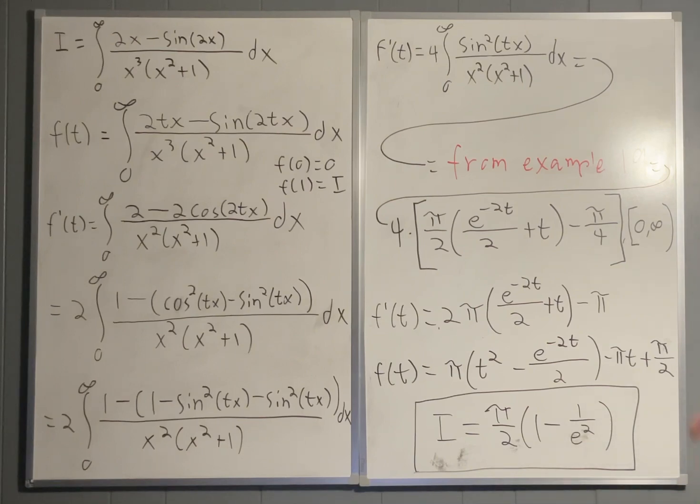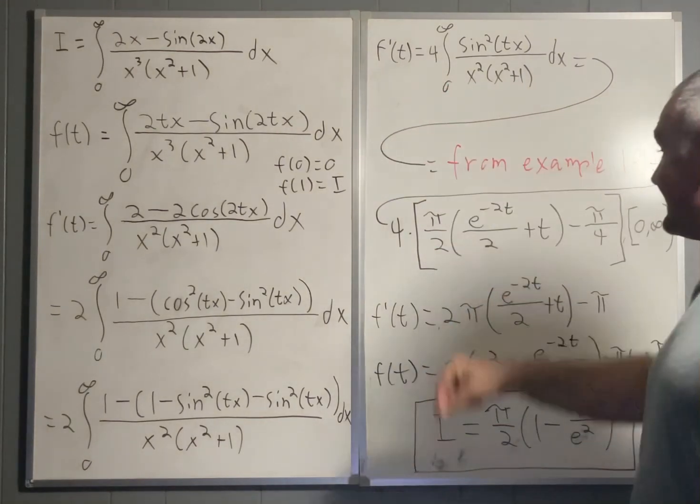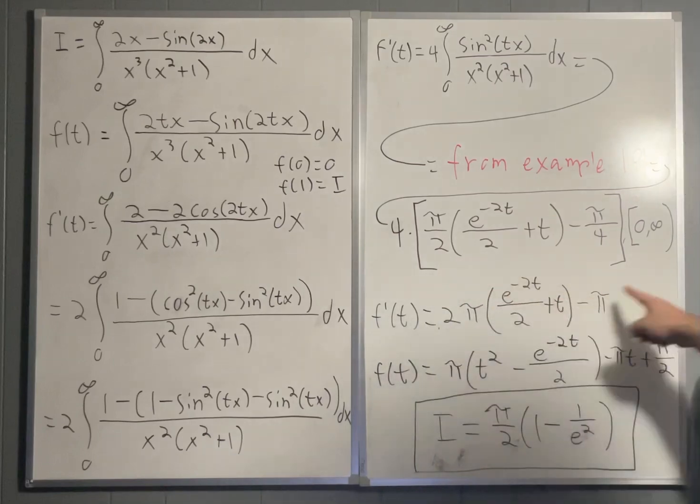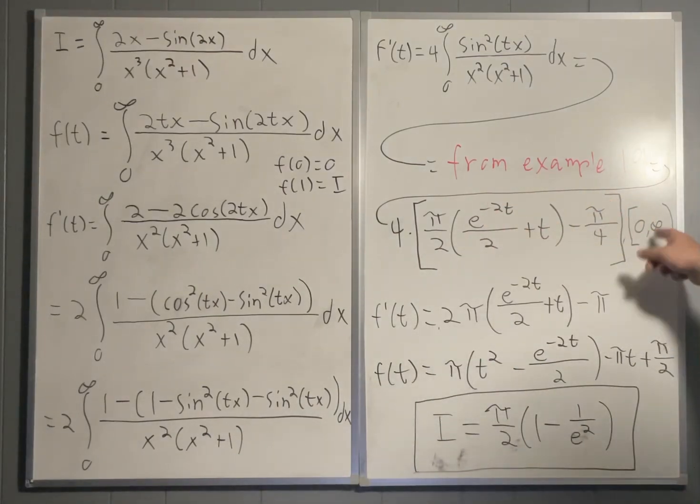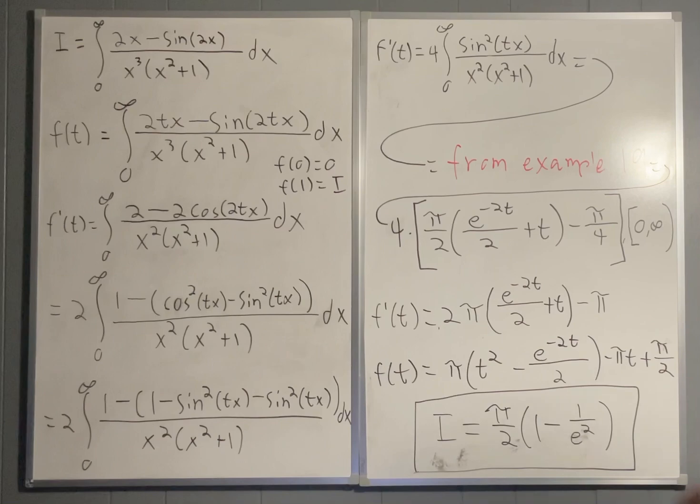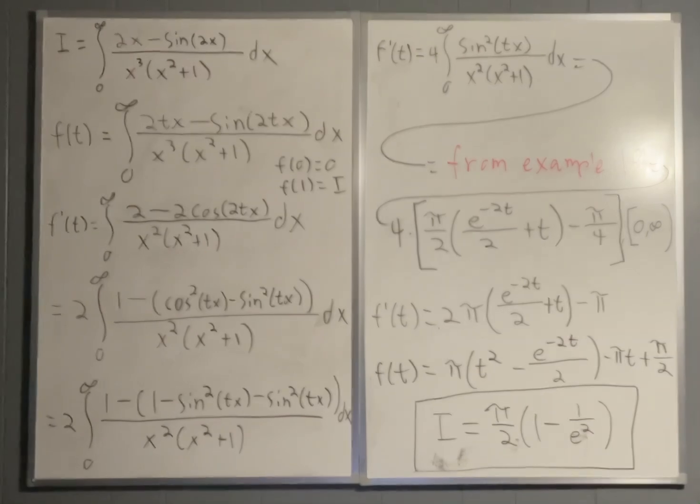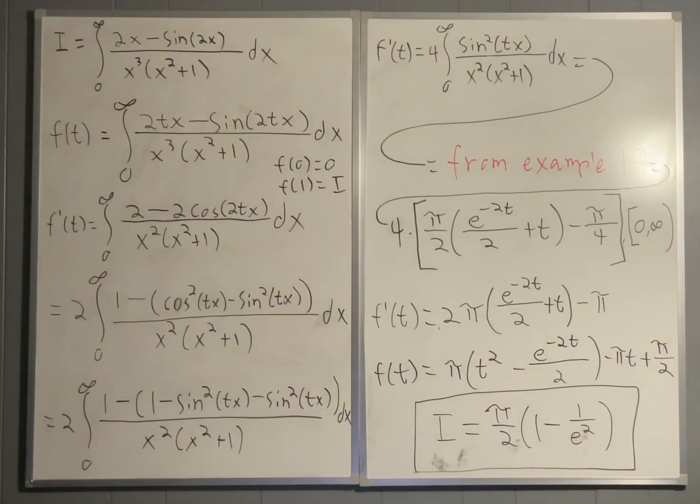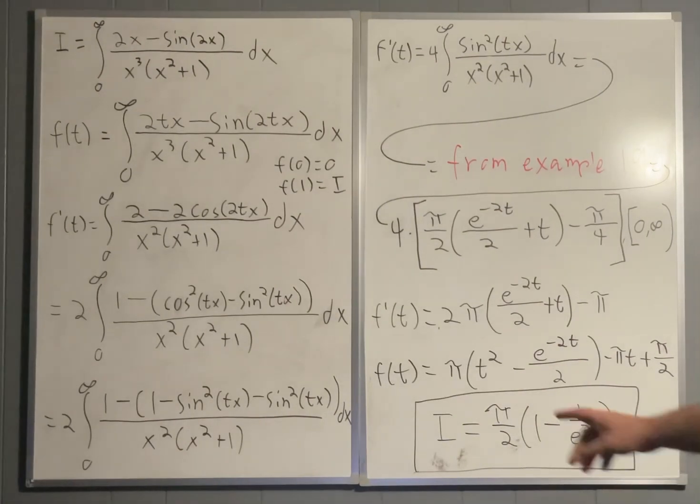So we have f prime of t is equal to 4 times this junk right here on the interval from 0 to infinity. So a little simplification, you can get f prime of t is equal to 2 pi times e to the negative 2t over 2 plus t minus pi.